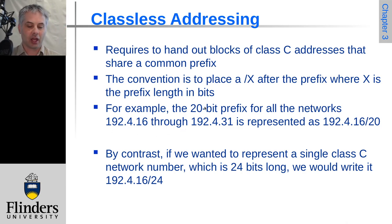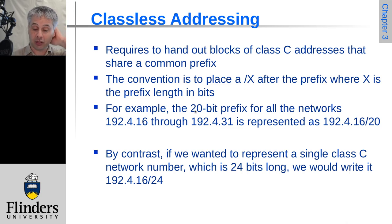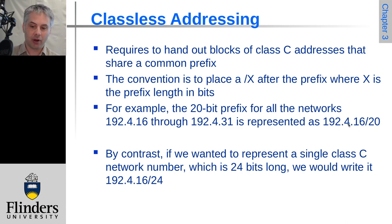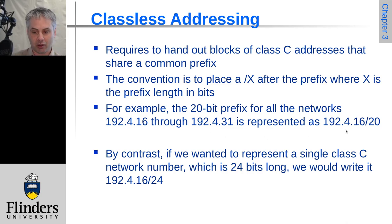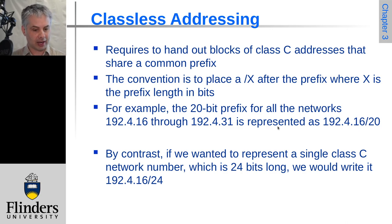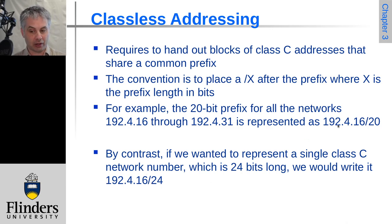Instead of having implicit class A, B, or C, we write a slash followed by the number of bits in the common prefix. For the 20-bit example, you'd write 192.4.16/20, or in full notation 192.4.16.0/20. The class A network 10.x.x.x can be written as 10/8, or commonly as 10.0.0.0/8. If the allocation was for a single class C instead of 16, it would be the same network number but with /24, since only the bottom eight bits are host numbers.